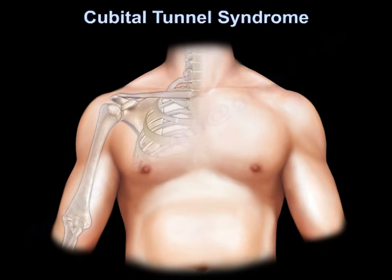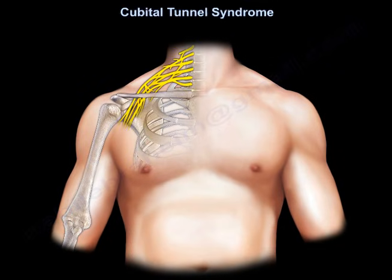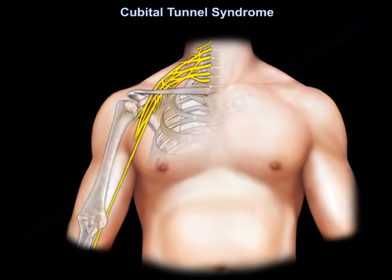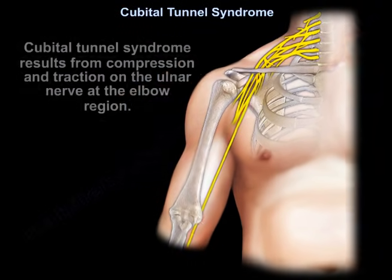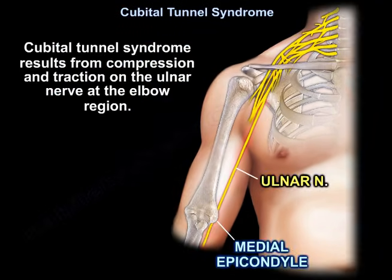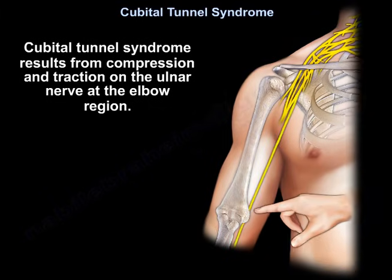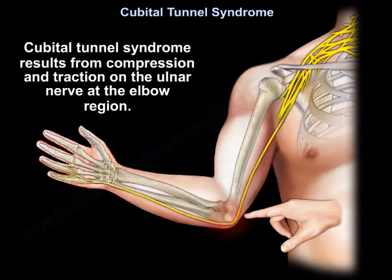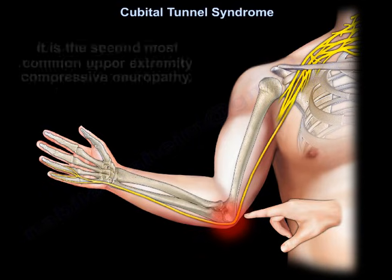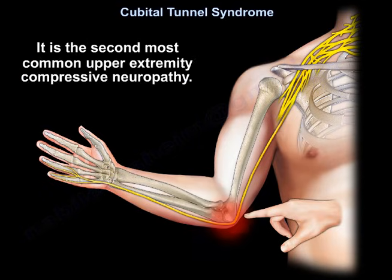Cubital tunnel syndrome results from compression and traction on the ulnar nerve at the elbow region. It is the second most common upper extremity compressive neuropathy.